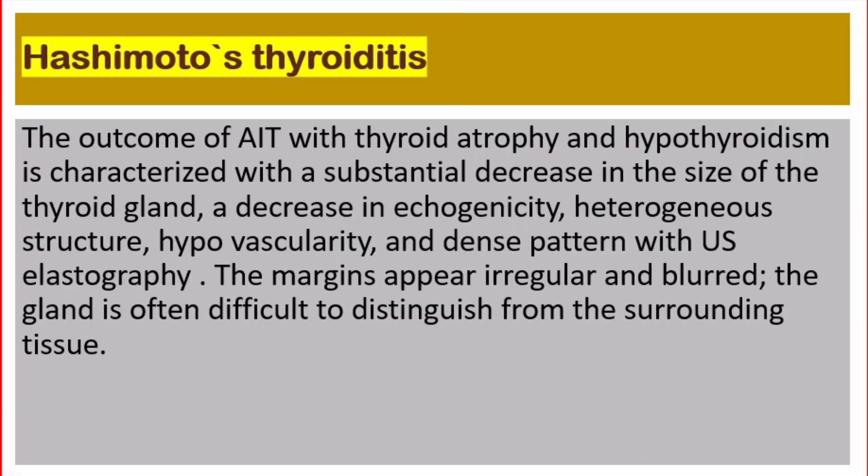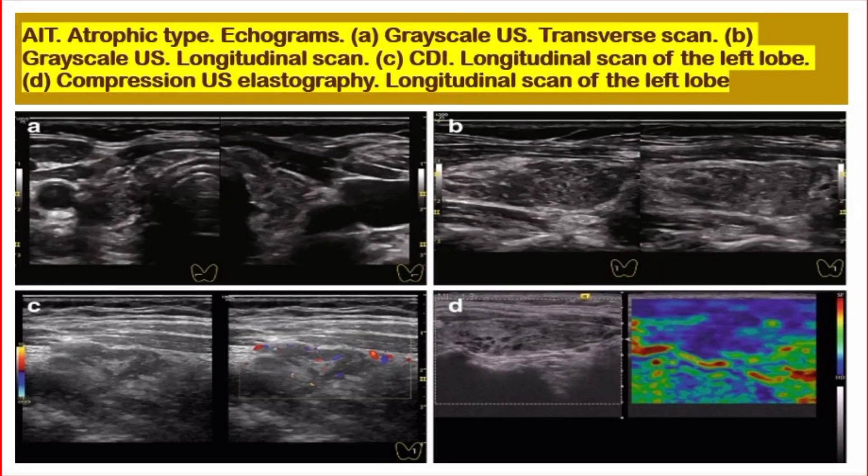Number eight: irregular enhancement of thyroid parenchyma with spots of hypo- or hyper-enhancement, related to the type or stage of autoimmune thyroiditis. Number nine: common reactive hyperplasia of regional lymph nodes, predominantly at levels five and six — pre-laryngeal, pre- and paratracheal, anterior and superior mediastinal. The outcome of autoimmune thyroiditis with thyroid atrophy and hypothyroidism is characterized by a substantial decrease in the size of the thyroid gland, decrease in echogenicity, heterogeneous structure, hypovascularity, and a dense pattern with ultrasound elastography. The margins appear irregular and blurred.